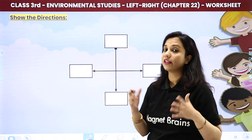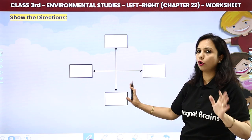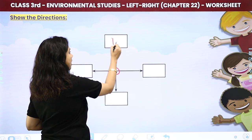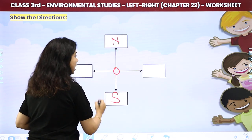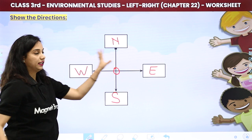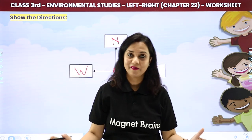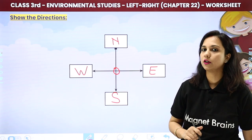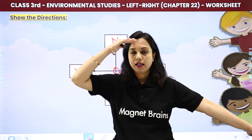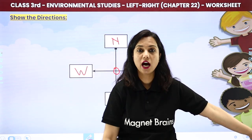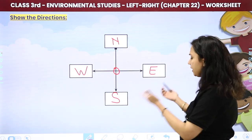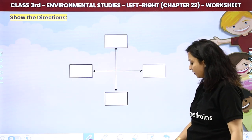Show the directions. It's very simple — this is the center point. North goes up, south is below, sun rises in the east and sets in the west. If you stand at the center with hands raised, head towards north, feet towards south, one side is west and the other side is east. That's how you can tell anyone the directions.